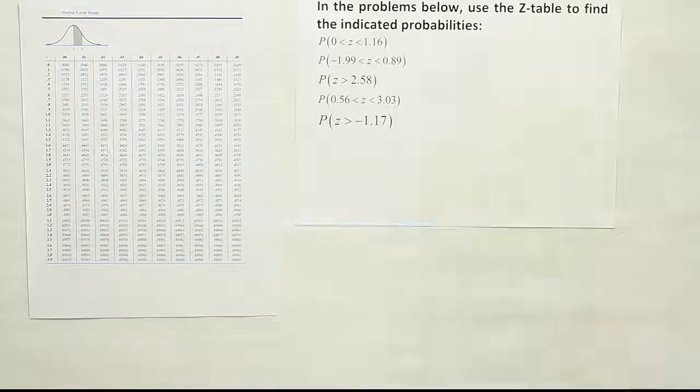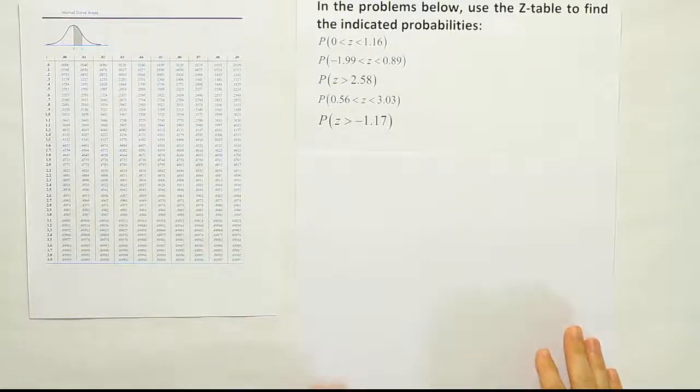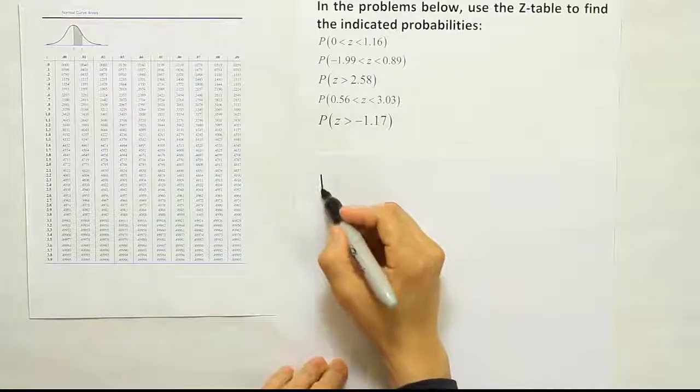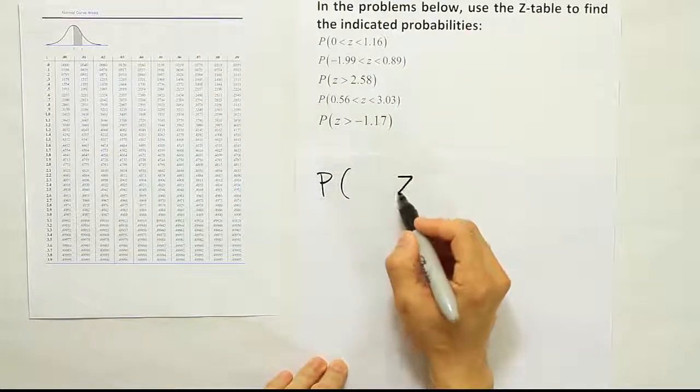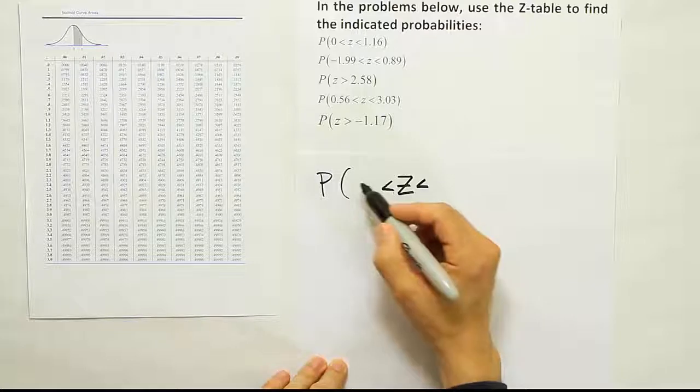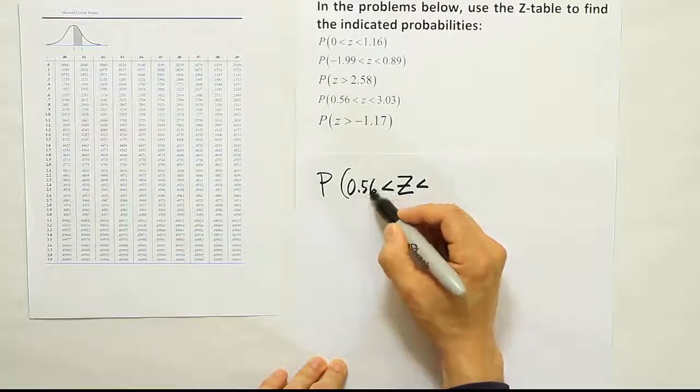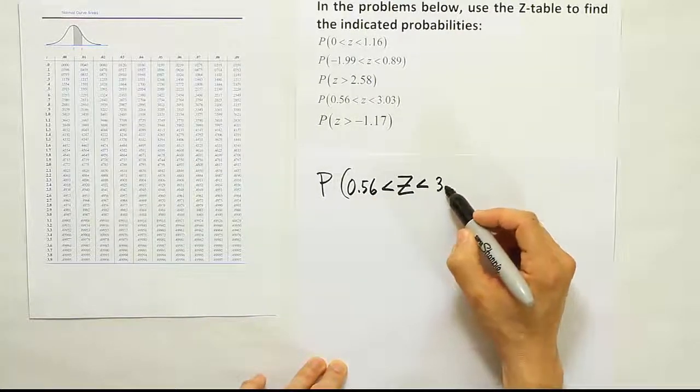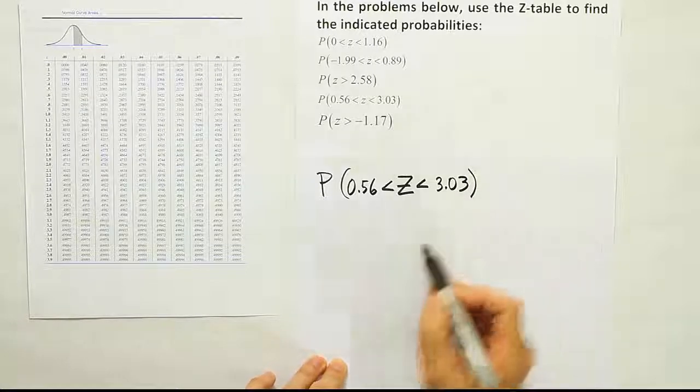Okay, so let's write out the statement so it's a little larger here. Probability that Z is between 0.56 and 3.03.